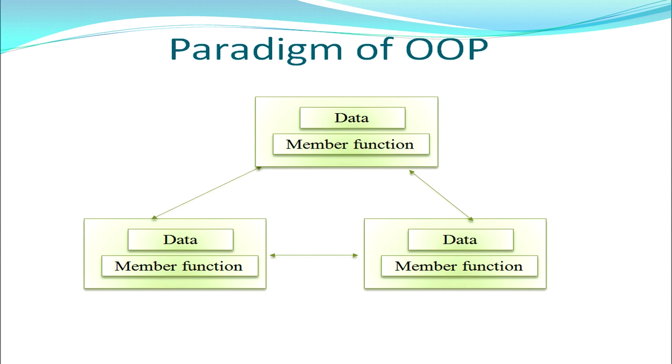In object oriented programming, data and member functions are grouped into a single unit called an object, so you will be working with multiple objects in a single program. Each object is a unique entity processed by its own data, and that data can be processed only by its own member functions. Every object is an independent entity used to define a particular thing or person with its unique features and methods. This is the paradigm of OOP.